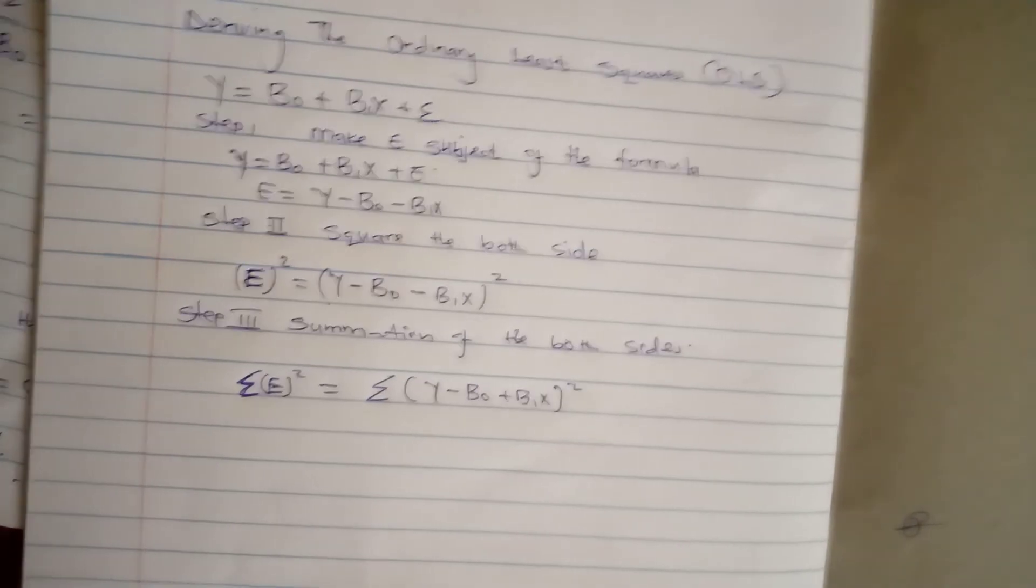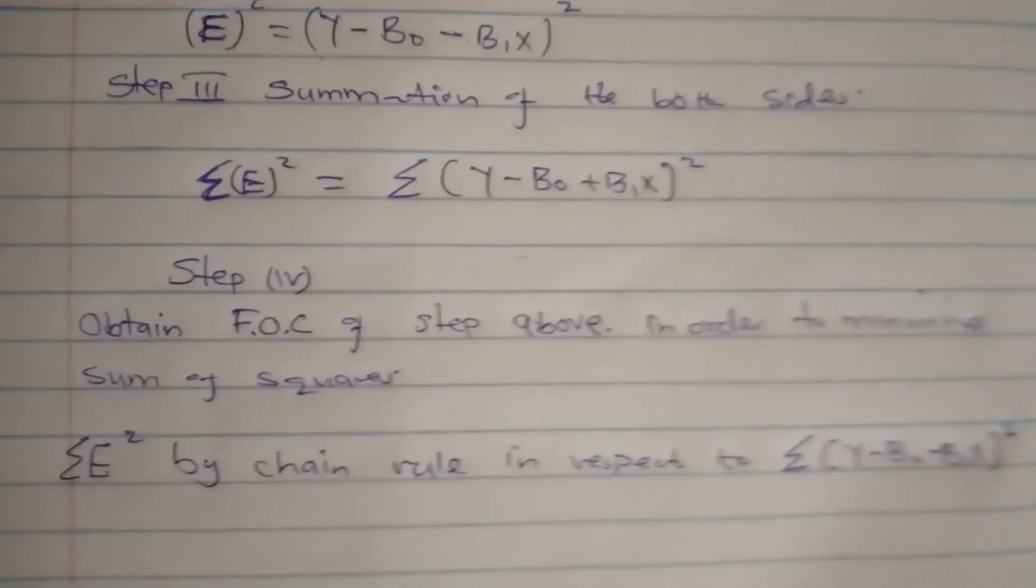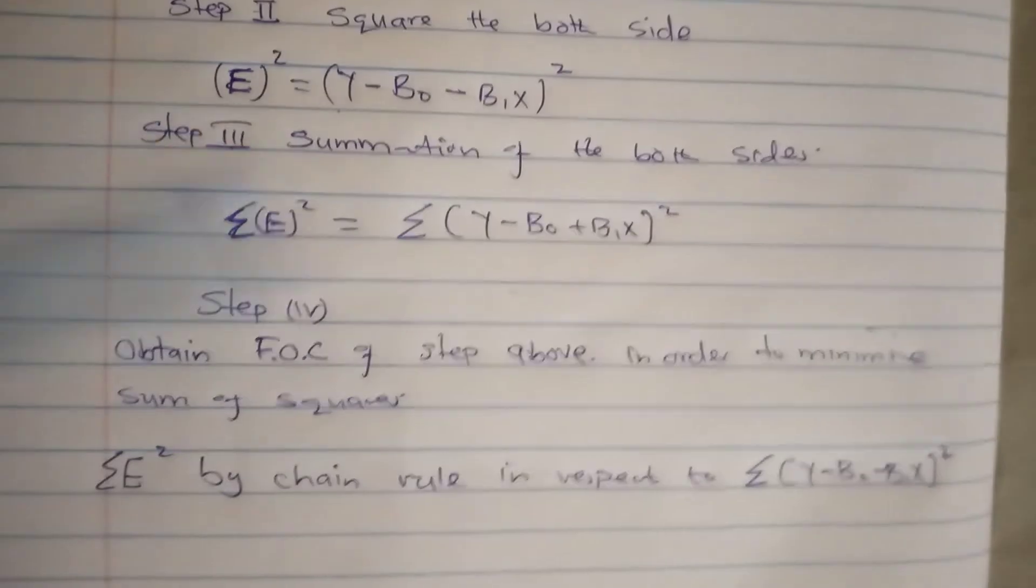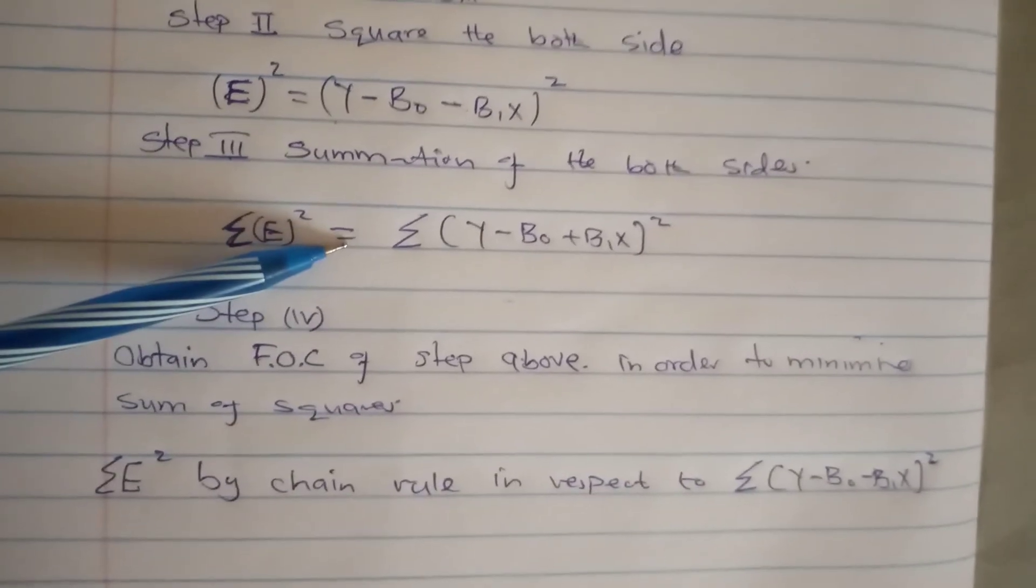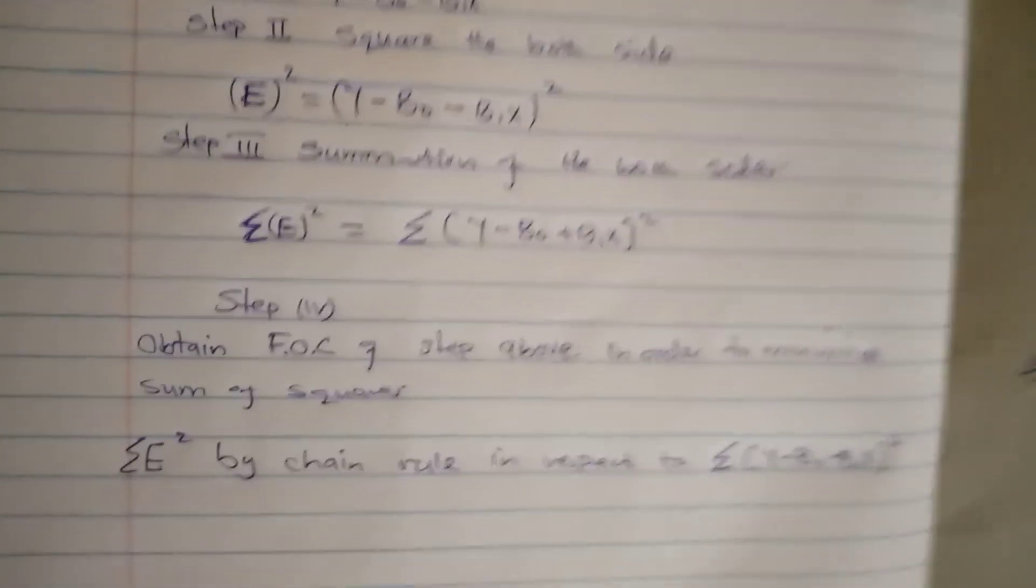Then from here we go to Step IV. In this step we look for the first order condition in order to minimize the sum of squares. That is by using the chain rule.